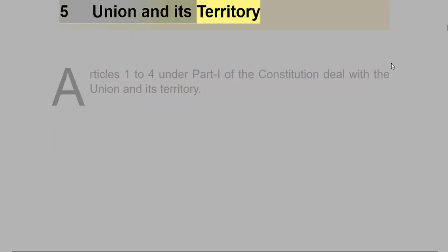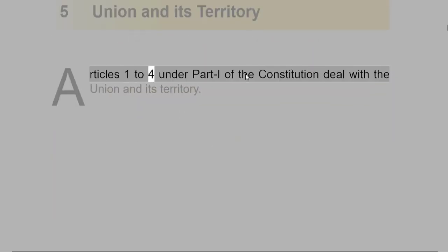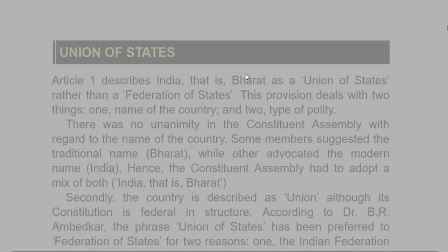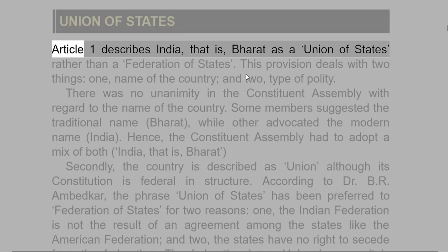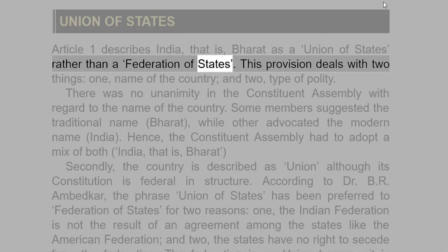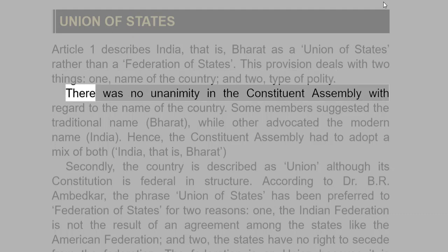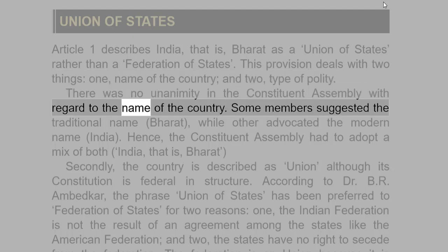Articles 1 to 4 under Part I of the Constitution deal with the Union and its Territory. Article 1 describes India, that is Bharat, as a Union of States rather than a Federation of States. This provision deals with two things: one, the name of the country, and two, the type of polity. There was no unanimity in the Constituent Assembly with regard to the name of the country.